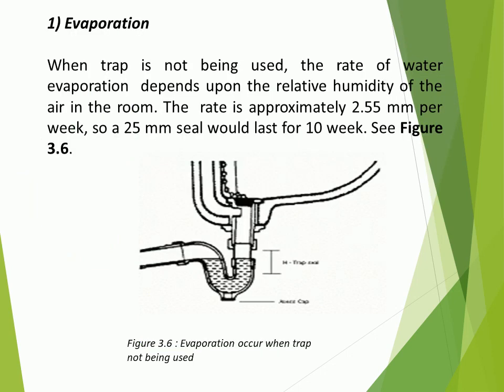Evaporation: when a trap is not being used, the rate of water evaporation depends upon the relative humidity of the air in the room. The rate is approximately 2.55 mm per week, so a 25 mm seal would last for 10 weeks. See figure 3.6.